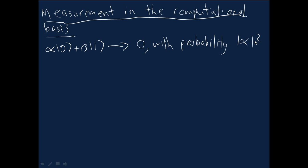That is the absolute value of alpha squared. And it gives you the outcome one with probability beta squared. Again, actually the absolute value.